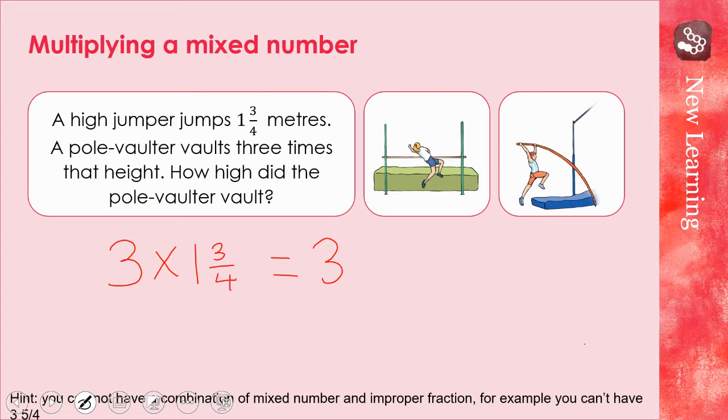Now, I've sorted this bit out. That bit's done. So now I'm doing three times three quarters. Well, when I'm multiplying fractions by a whole number, the denominator stays the same. And I do the whole number multiplied by the numerator, which is nine. Now, unfortunately, you cannot have an answer where it is both a mixed number and an improper fraction like we have here.